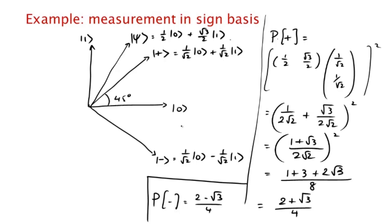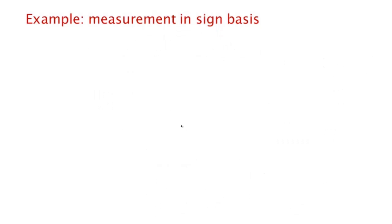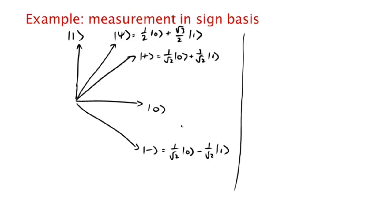Let me show you one other way you can do this calculation, which should give you the same value, but it might be worth doing just to give you intuition. What we'll do is we want to measure |ψ⟩ in the |+⟩/|−⟩ basis. So we'll first rewrite |ψ⟩ as α|+⟩ + β|−⟩. Once we write it that way, the probability of seeing |+⟩ when we measure in the |+⟩/|−⟩ basis is just |α|².